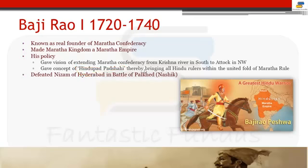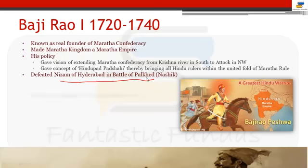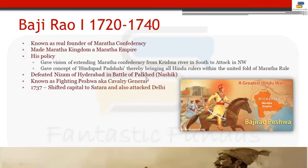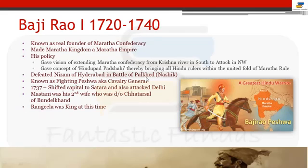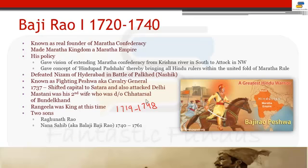Bajirao I defeated the Nizam of Hyderabad in the Battle of Palkhed — remember this battle. He was known as the 'fighting Peshwa' because he spent his whole life expanding the Maratha Empire. He shifted the capital to Satara and attacked Delhi in 1737. His second wife was Mastani, famously known from Bundelkhand — she was the daughter of Chhatrasal, the king of Bundelkhand. At this time, Muhammad Shah Rangila was king from 1719 to 1748.